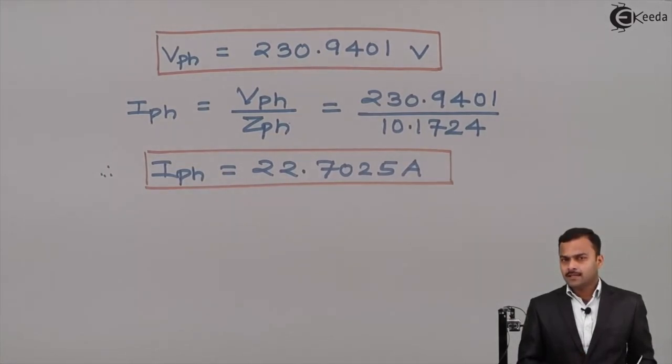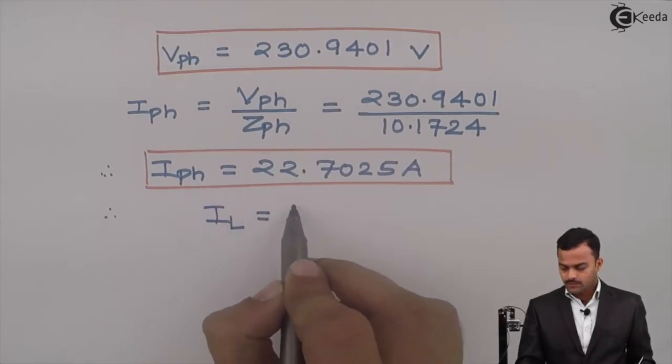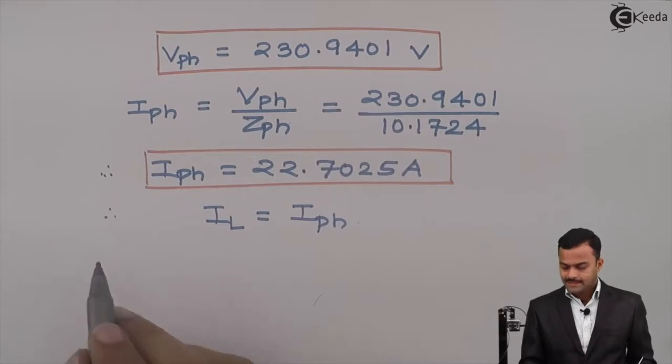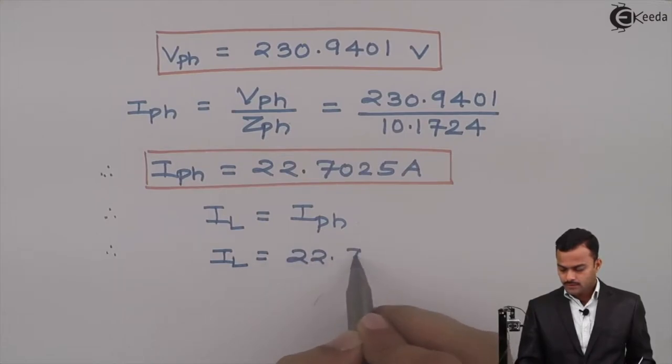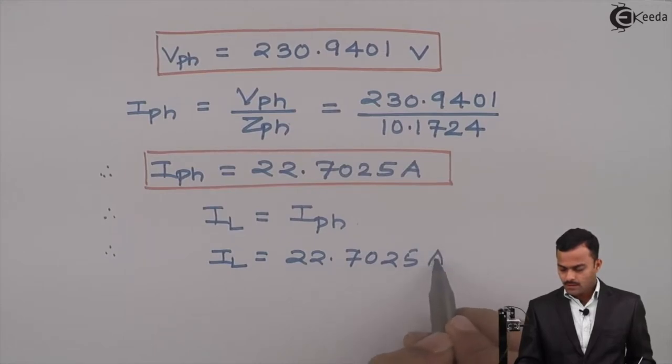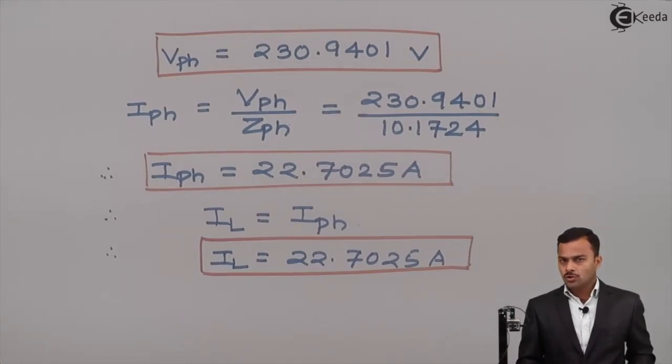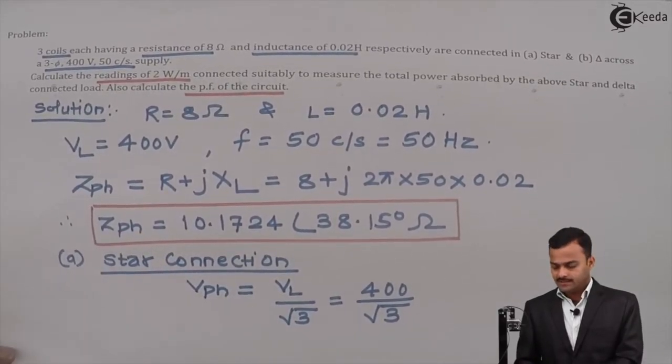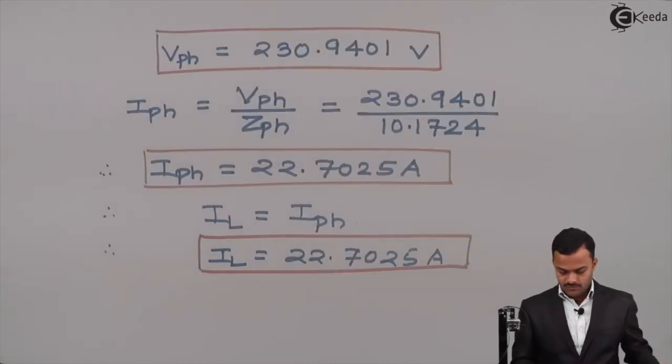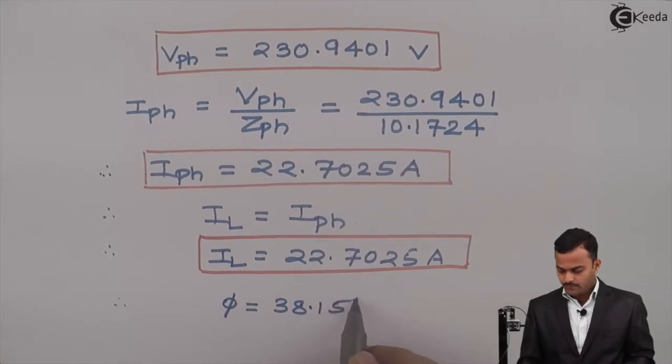It's a star connected load. In a star connected load, line current equals phase current. Hence, line current IL equals 22.7025 amperes. The value of phi is nothing but the angle of Zph, so phi is 38.15 degrees.